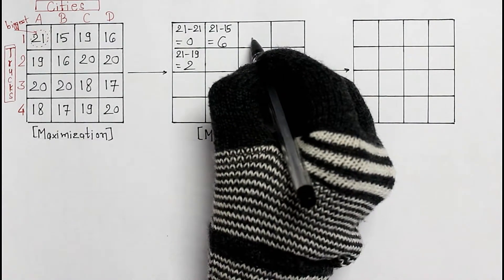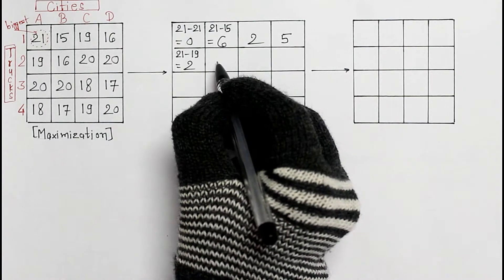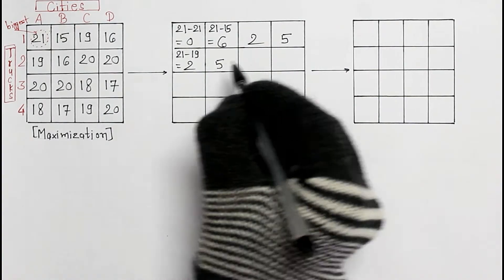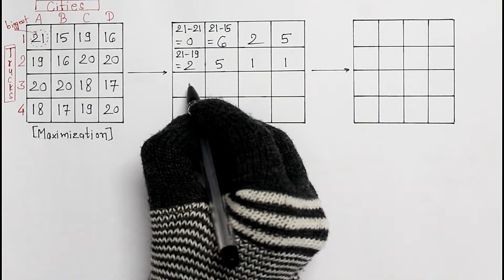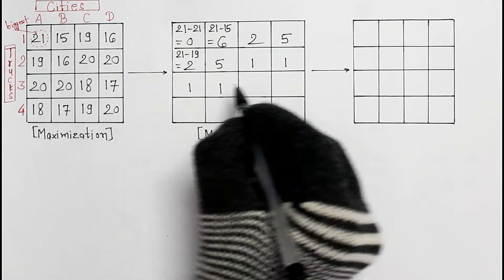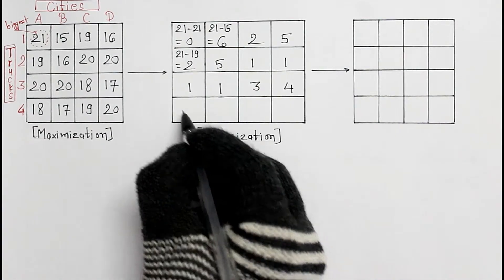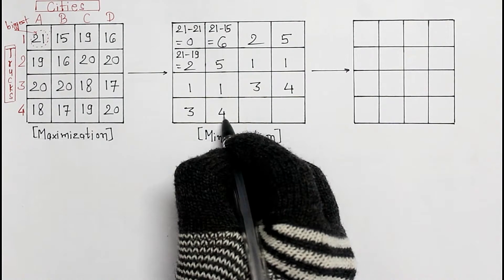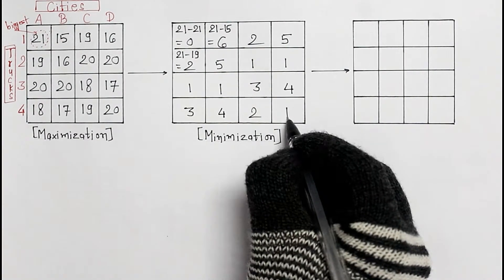In this cell, 2, 5, 5, 1, 1, 1, 1, 3, 4, 3, 4, 2, and 1.